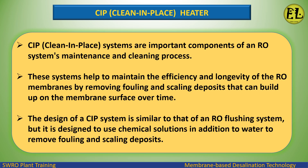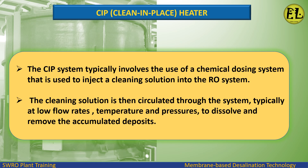CIP Clean-In-Place systems are important components of an RO system's maintenance and cleaning process. These systems help to maintain the efficiency and longevity of the RO membranes by removing fouling and scaling deposits that build up on the membrane surface over time. The CIP system uses chemical solutions in addition to water, typically circulated at low flow rates, temperatures, and pressures to dissolve and remove accumulated deposits.